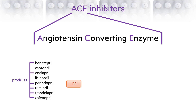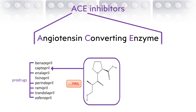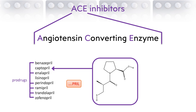The first drug of this group to be discovered was captopril, and this is its chemical structure. The active components of all the drugs contain this part of the structure, which enables them to bind to the same site in the enzyme and inhibit its activity.